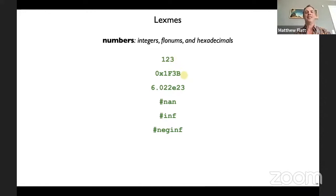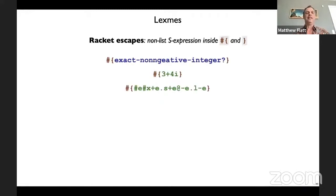Numbers compared to Racket — the number syntax is greatly simplified. You have exact integers, perhaps in hexadecimal form, but no octal, no binary. Floating point numbers in the usual way, or the three special floating point numbers: not-a-number, infinity, or negative infinity. We're using the scheme hash as our escape for these one-off constants. If you need fancier identifiers or numbers — like maybe a complex hexadecimal number in polar notation — you can use hash curly brace to get into the s-expression world with all of the Racket s-expression complexity and syntax.